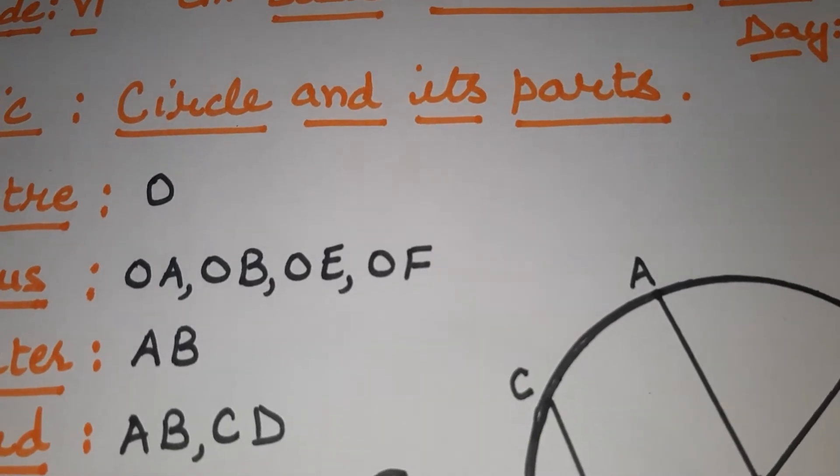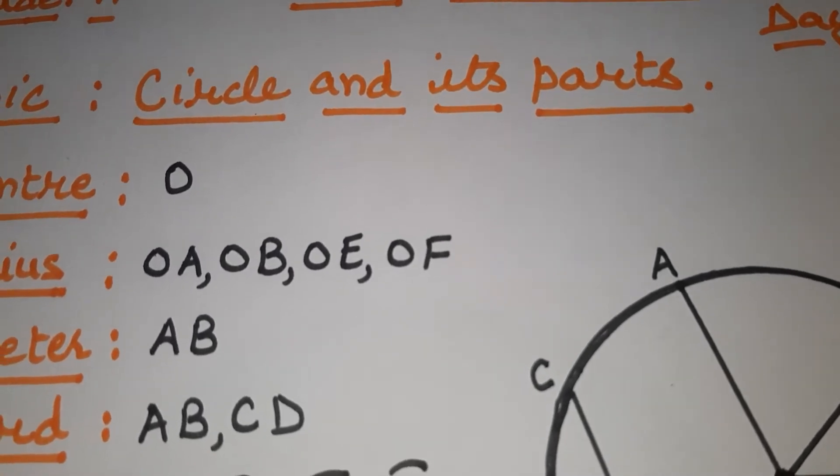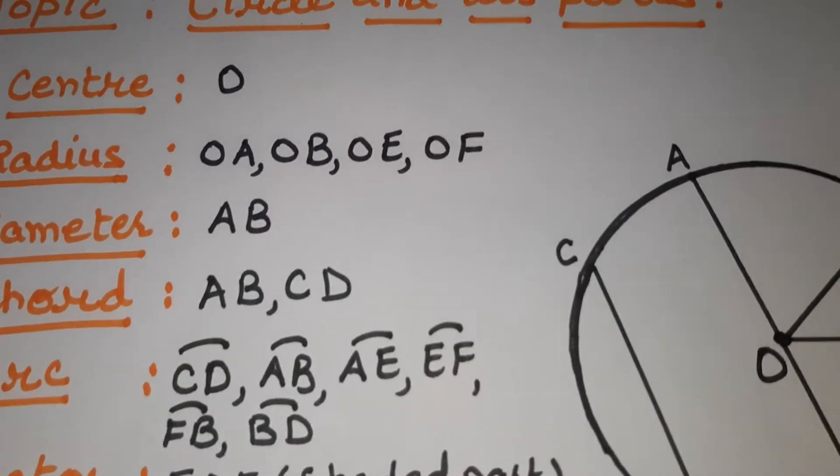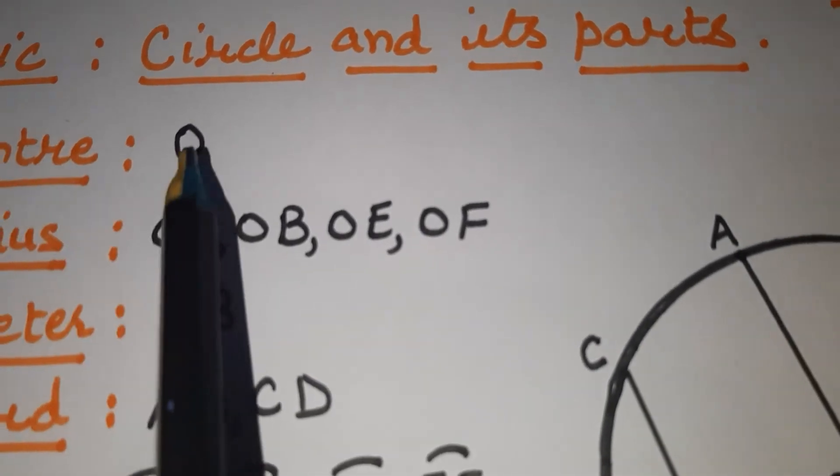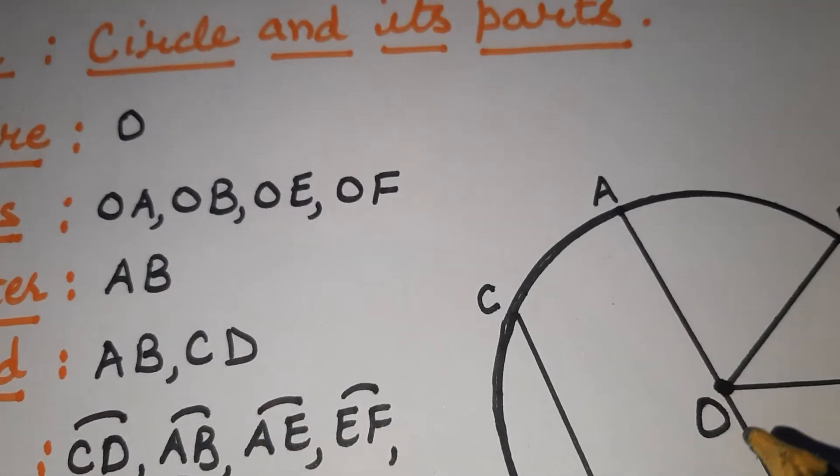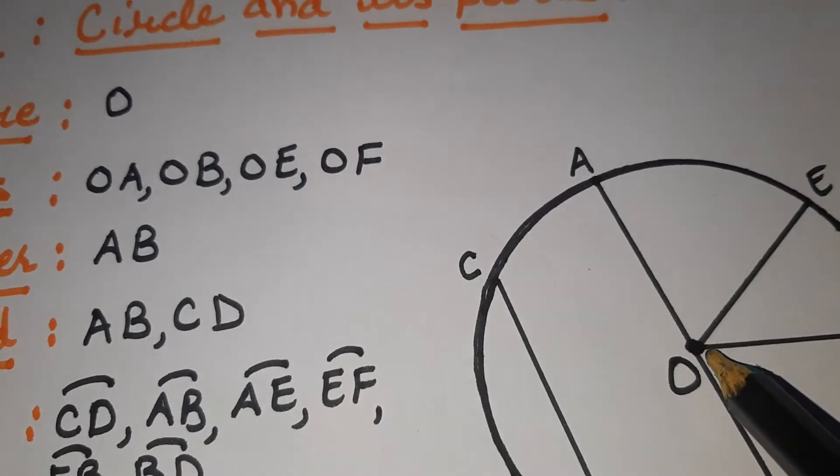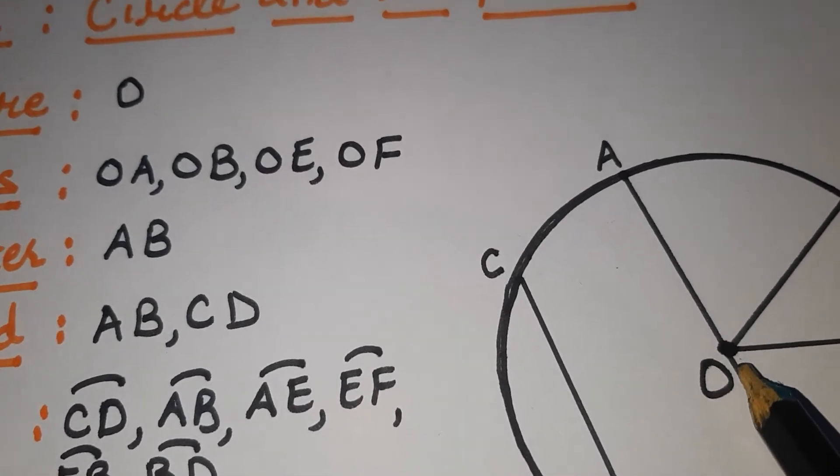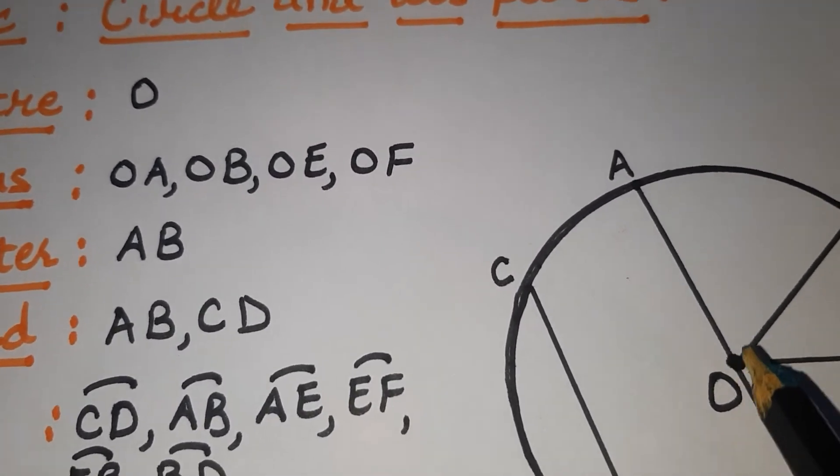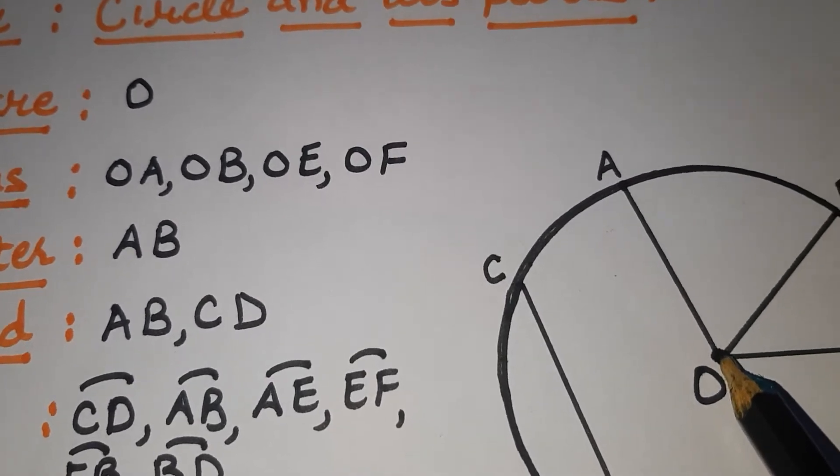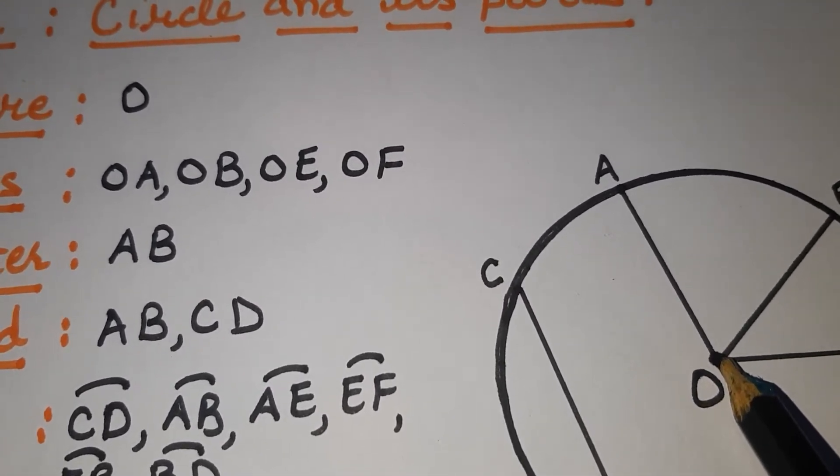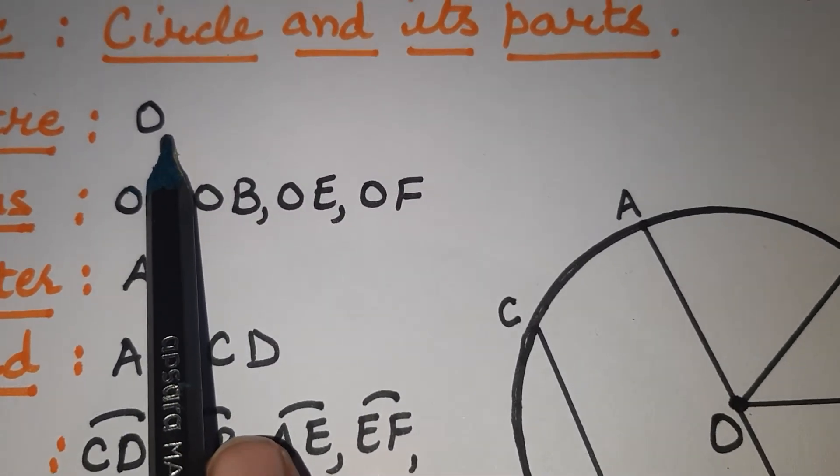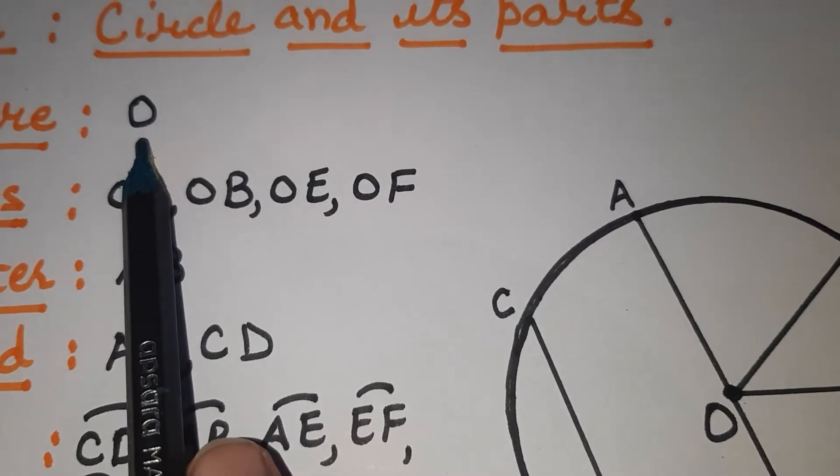You all are aware of circle and some of its parts, but a few parts are new for you. So let's start. First part of circle is center. Center means where we keep our compass to draw the circle, that point is called center. It's a point, and you know that point is a location. We can represent it with any alphabet, so I am taking here O as center.